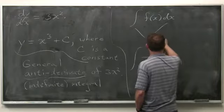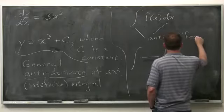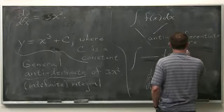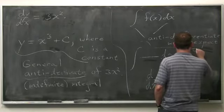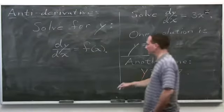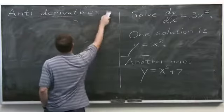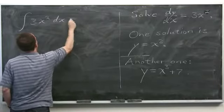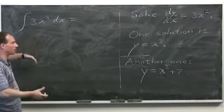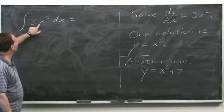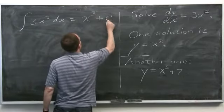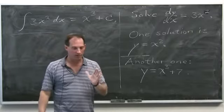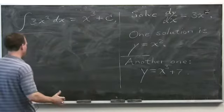This means all of our differentiation rules give us anti-differentiation rules — you just read them backwards and add a plus c. The integral sign together with the dx tells you to anti-differentiate whatever is between them with respect to x. It's kind of the inverse operator to d/dx.